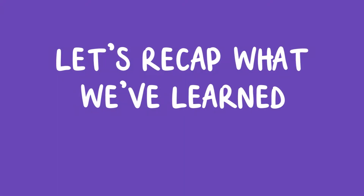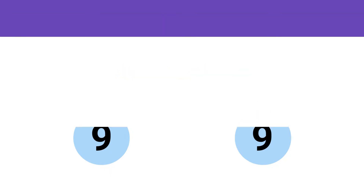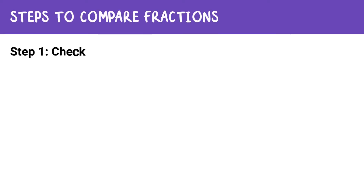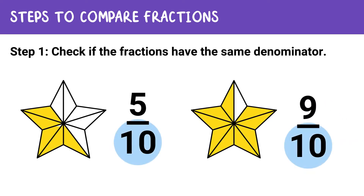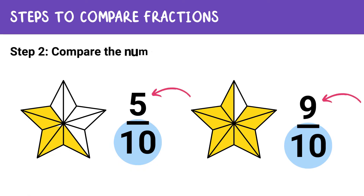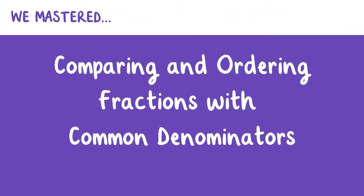Great job! You've learned how to compare and order fractions with common denominators. Let's quickly go over the key points. Fractions with common denominators have the same bottom number — they are comparing the same size pieces of a whole, which makes them easier to compare because you can focus on the numerators. Step 1: Check if the fractions have the same denominator. Step 2: If they do, compare the numerators — the fraction with the larger numerator is the bigger fraction. For example, 9 is larger than 5, so 5 tenths is less than 9 tenths. Now you're ready to compare any fractions with the same denominator. Keep practicing, and soon it will be a piece of cake!